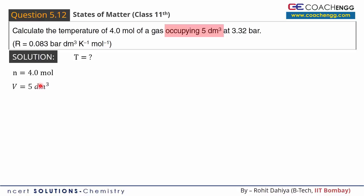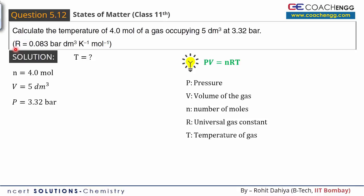Occupying 5 decimetre cube, the gas sample volume is 5 dm³ at 3.32 bar. The gas pressure given is 3.32 bar. In the problem, the universal gas constant R value is 0.083 bar dm³ per mole kelvin.